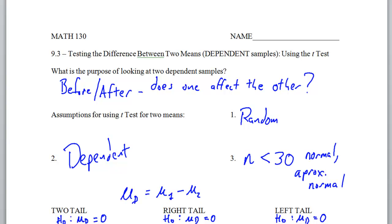In a two-tailed test, you're looking for the alternative hypothesis where mu sub d should be not equal to zero. In a right-tailed test, your mu sub d should be greater than zero. And in the alternative hypothesis for the left-tailed test, your mu sub d should be less than zero.